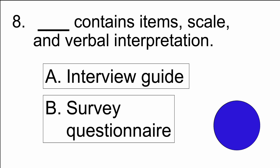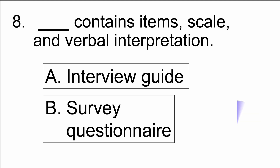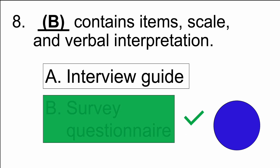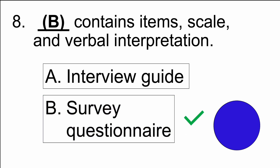Number eight: blank contains items, scale, and verbal interpretation — A) interview guide, or B) survey questionnaire. The answer is B) survey questionnaire.